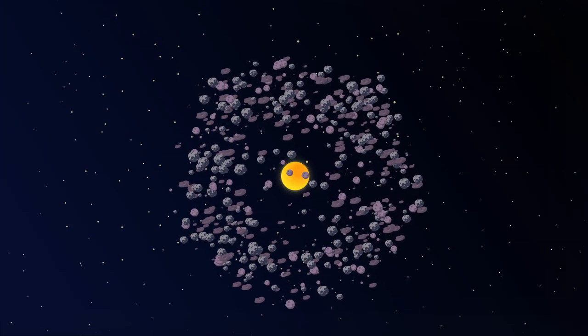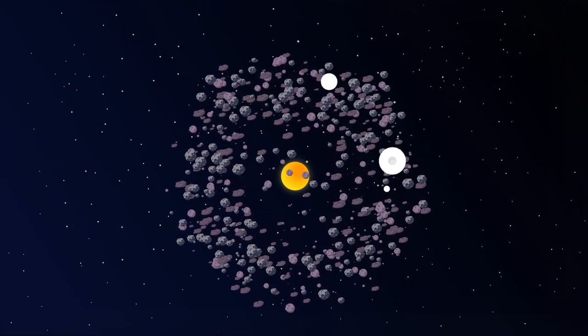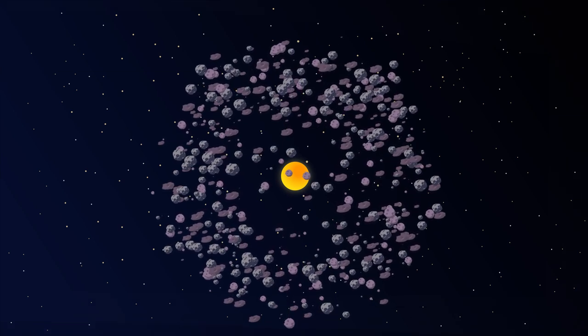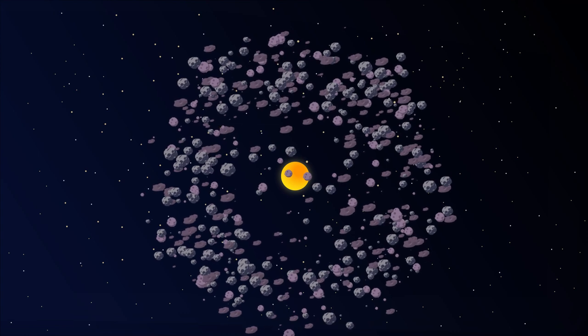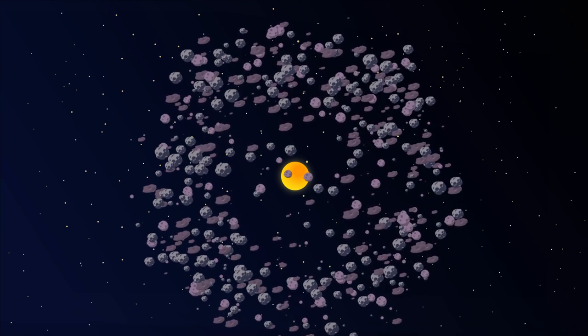Asteroids are debris left over from the formation of the planets early in the life of the solar system, or the result of later collisions between celestial bodies. They contain important information about the time when the planets in the solar system were formed.